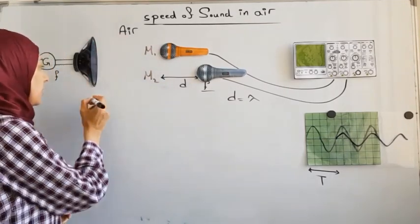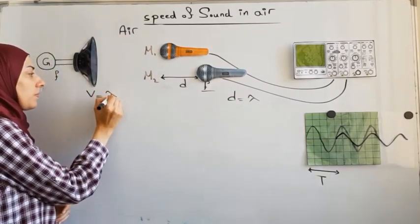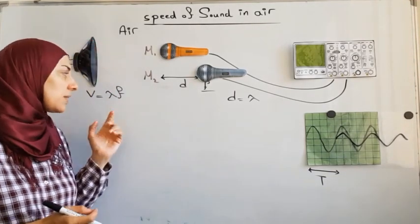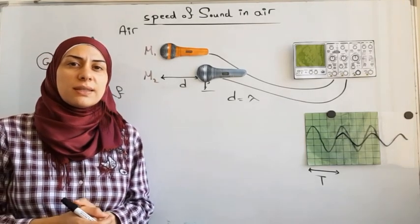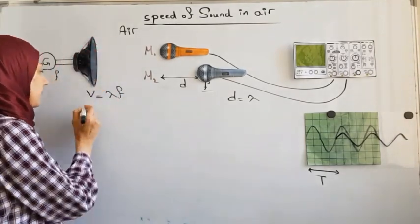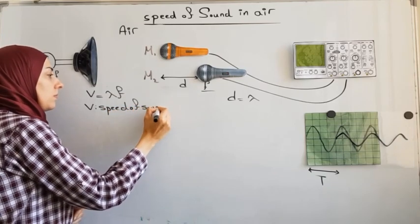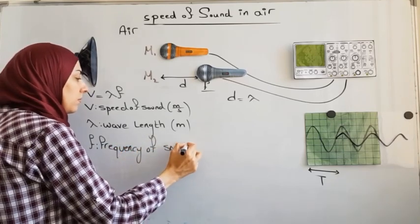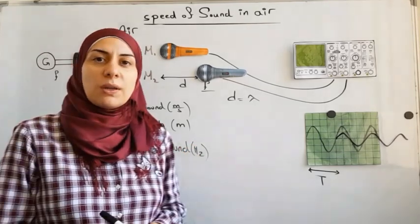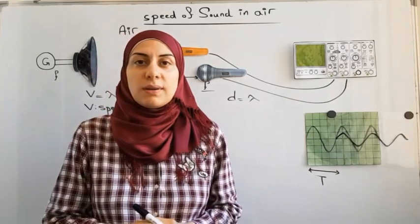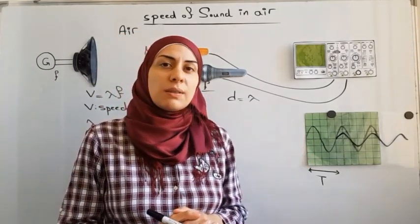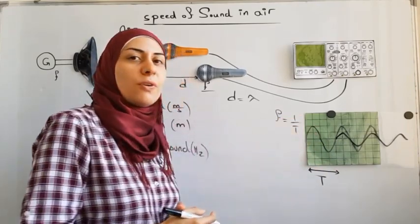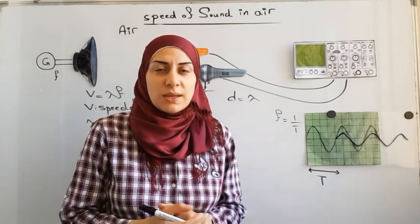After knowing that D equals lambda, we can use the formula V equals lambda times F, where V is the speed of sound in meters per second, lambda is the wavelength in meters, and F is the frequency of sound in hertz. We can find the frequency either from the function generator, or we can calculate the period T from the oscilloscope and then use the formula F equals 1 over T to find the frequency of sound.